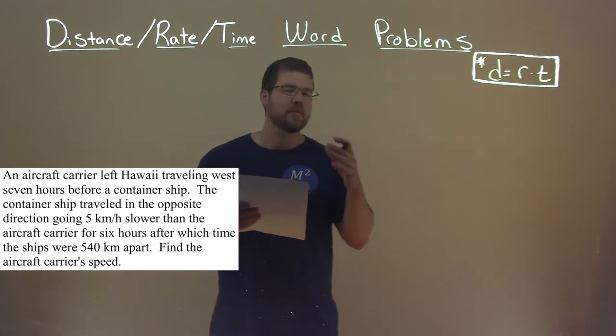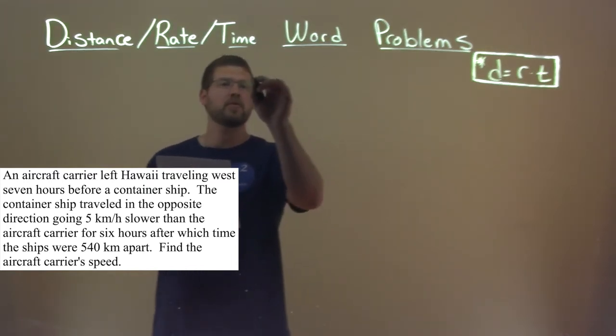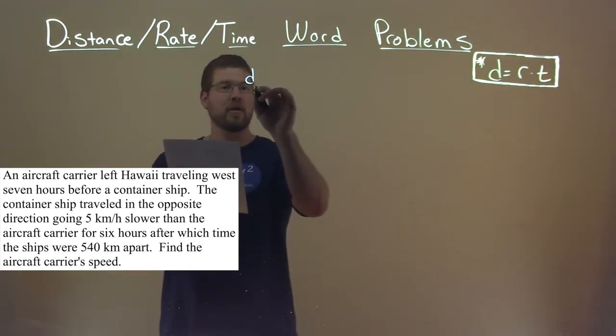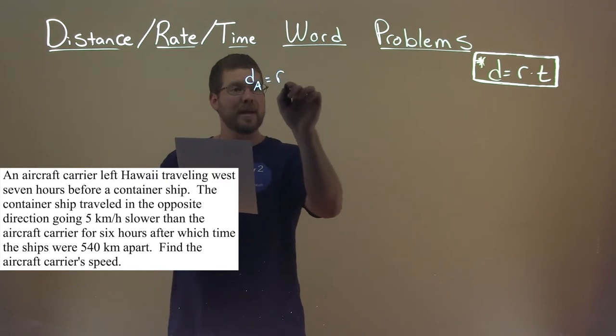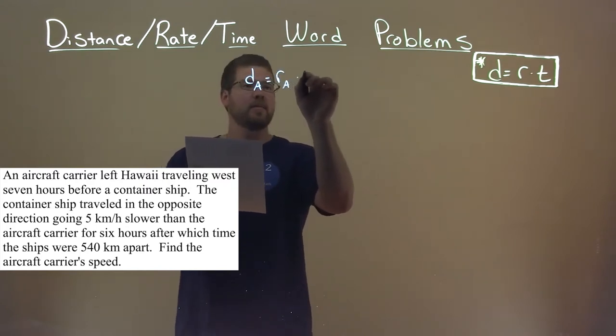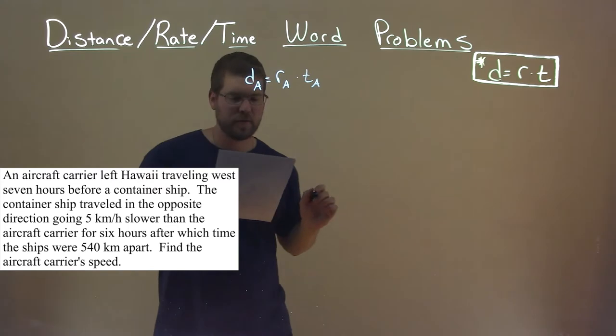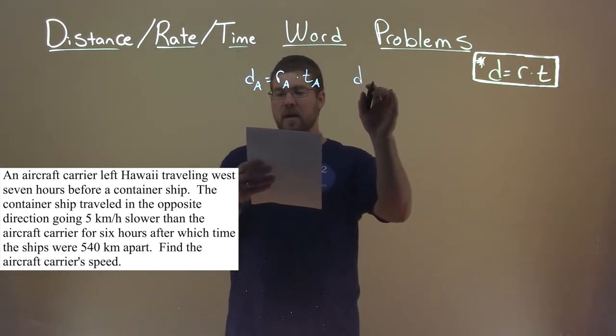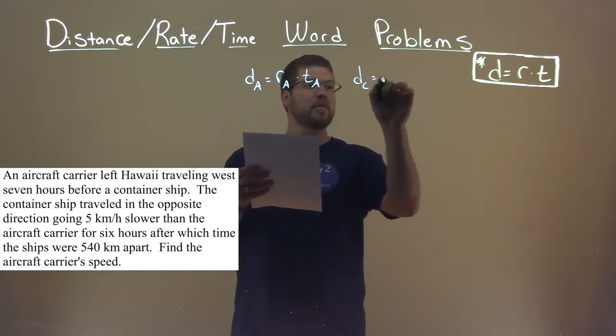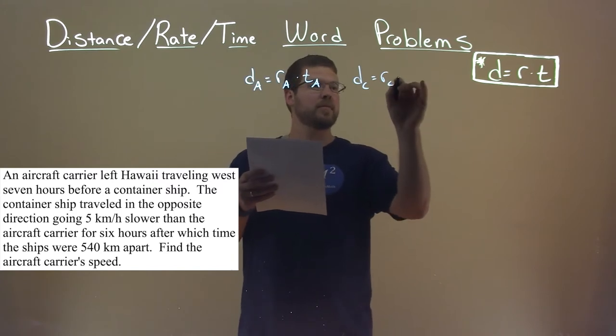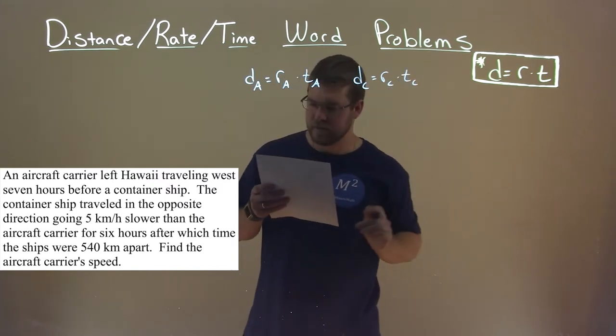So these are distance, rate, time problems. Let's set them up here. The distance of the aircraft carrier is equal to the rate of the aircraft carrier times the time of the aircraft carrier. The distance of the container ship is equal to the rate of the container ship times the time of the container ship.